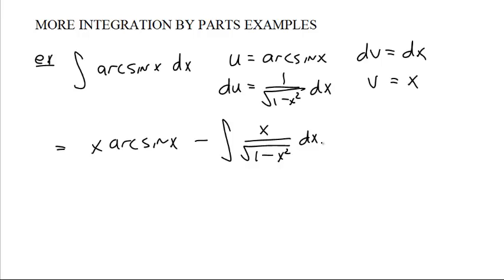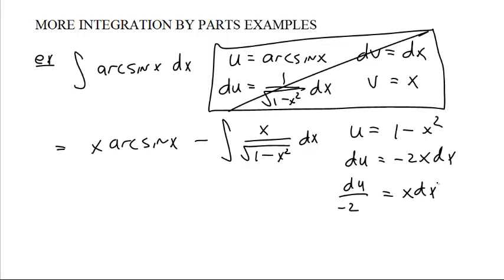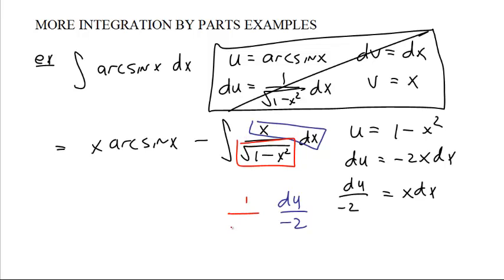This is now something that we can solve with regular u-substitution. At this point we can kind of can this — we've turned this into this. Now we can do u-substitution with a u that has nothing to do with what u has previously been. u is the stuff inside: 1 minus x squared. du is negative 2x dx. We have the x dx, so du over negative 2 will be the x dx. x dx turns into du over negative 2, and this thing in here turns into 1 over the square root of u.